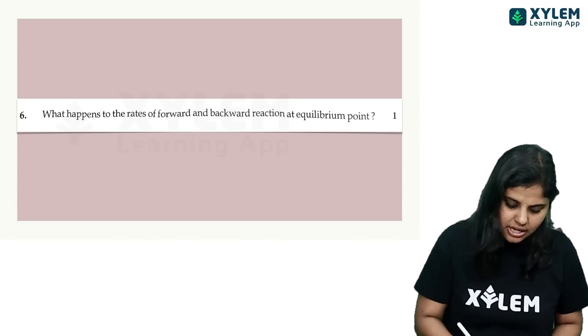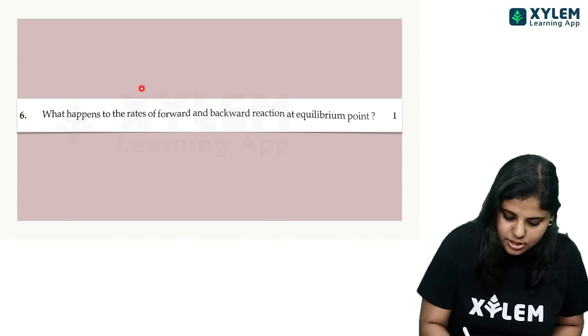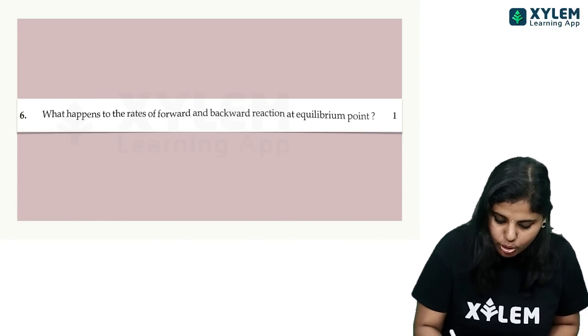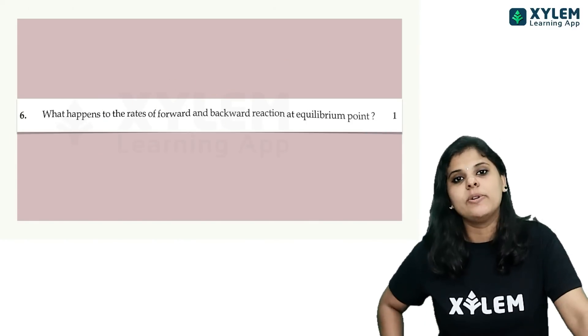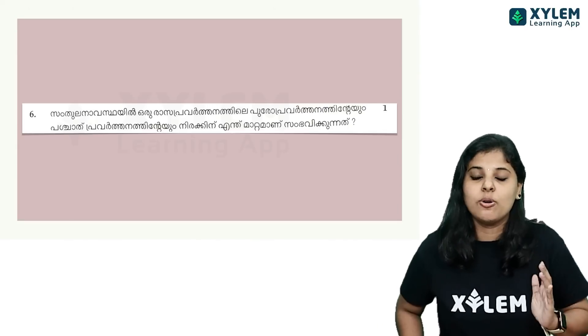First question: What happens to the rates of forward and backward reaction at equilibrium point?